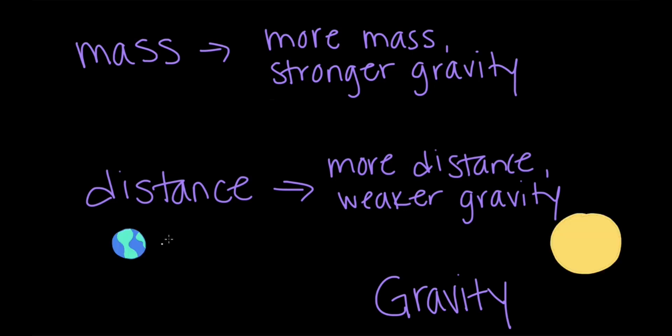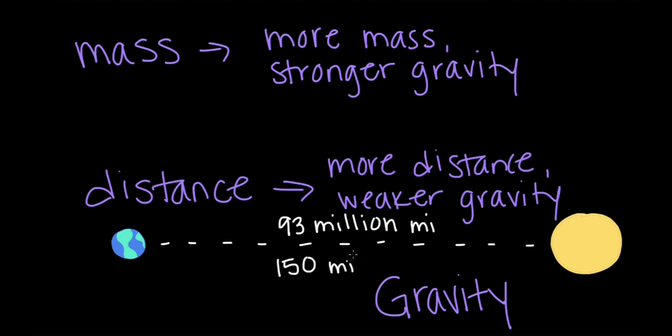We know that things in space are really far apart. The Earth is almost 93 million miles, that's 150 million kilometers, from the Sun. So if gravity is weaker when objects are farther apart, then in order for gravity to be keeping these structures bound together, they must be really massive. And they are.